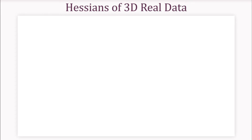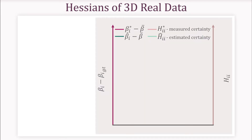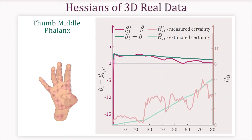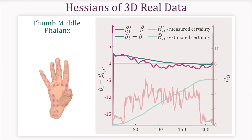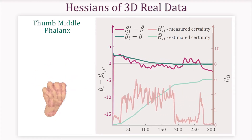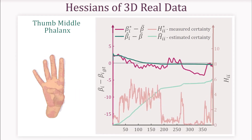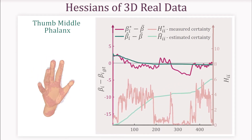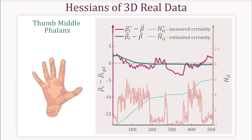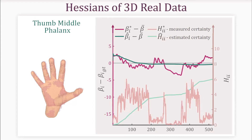Let us now verify our mathematical formulation on a full 3D example. Consider the Hessian entry corresponding to the middle phalanx of the thumb. When the thumb is bent, certainty is high. When the thumb is straight or occluded, certainty is low. Poses with high certainty yield estimated values closer to the correct value, and this allows the algorithm to converge towards a good estimate.